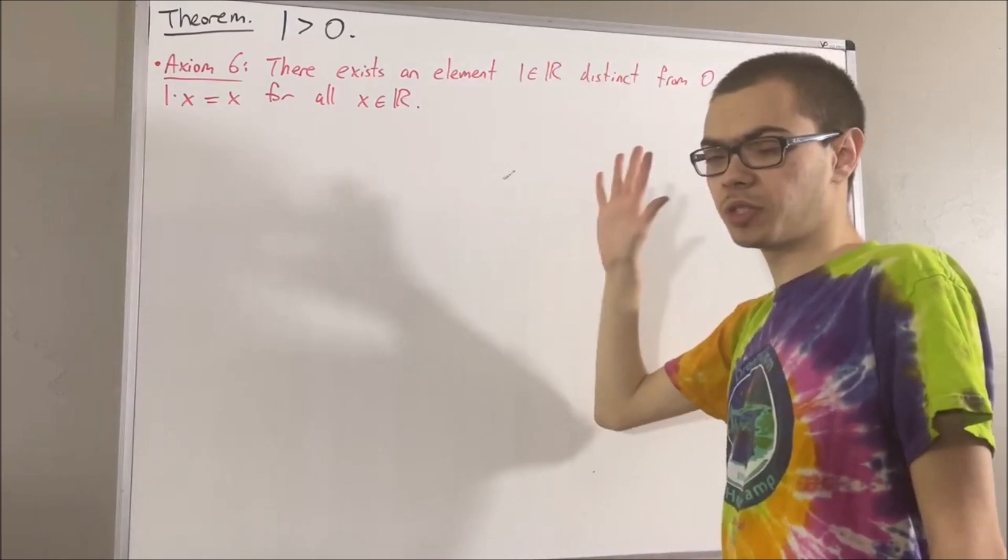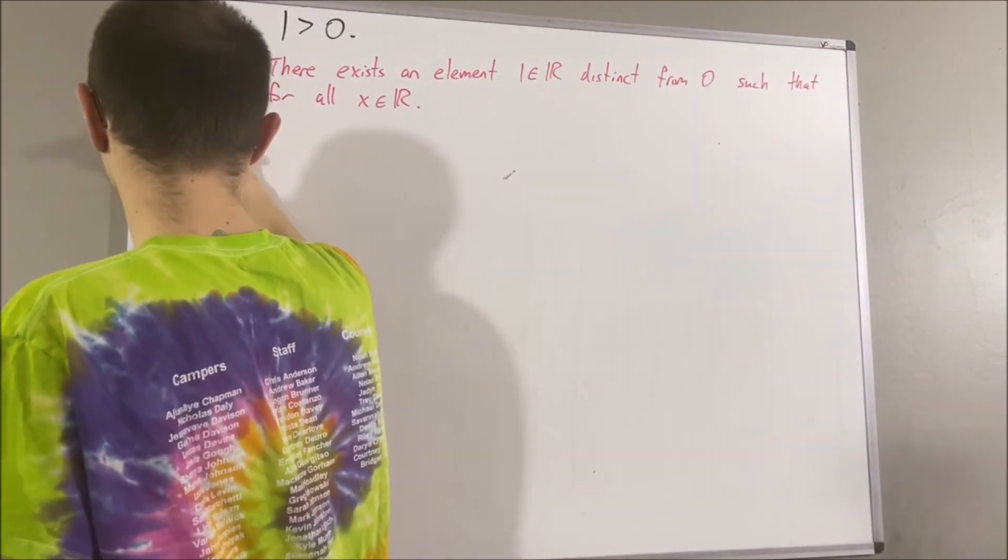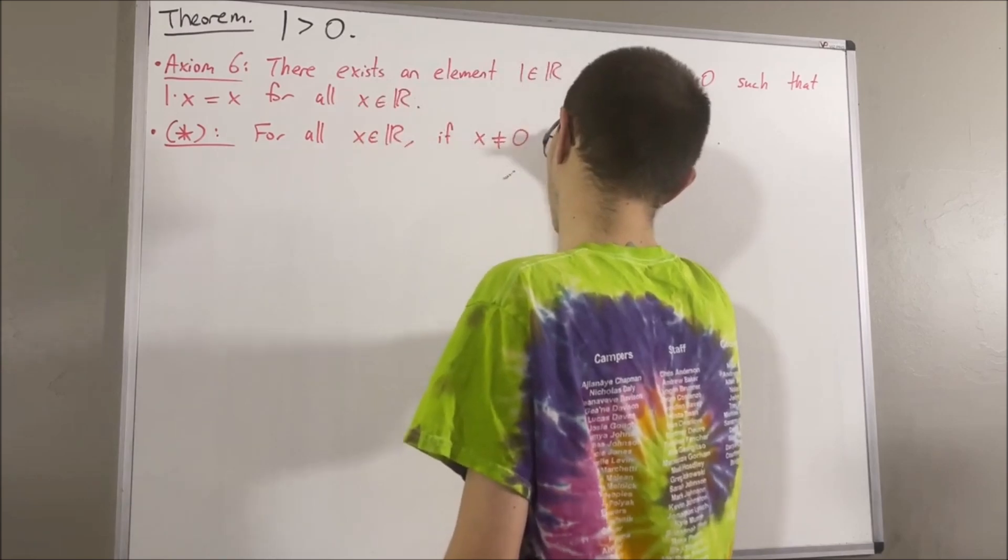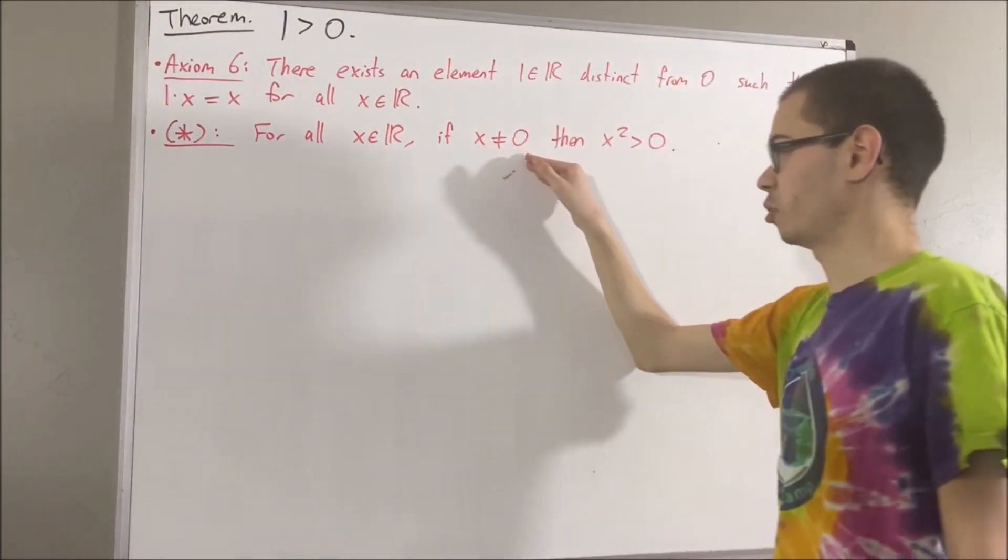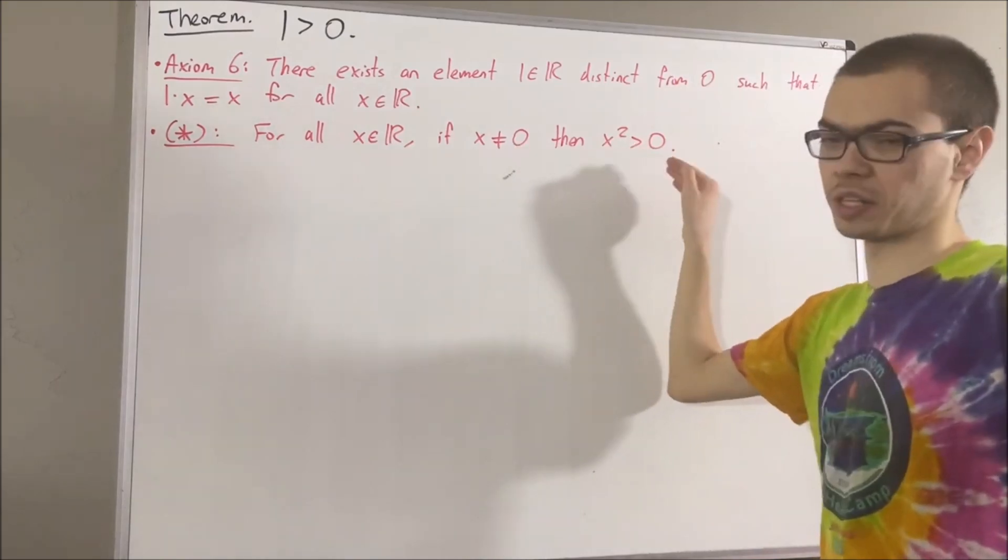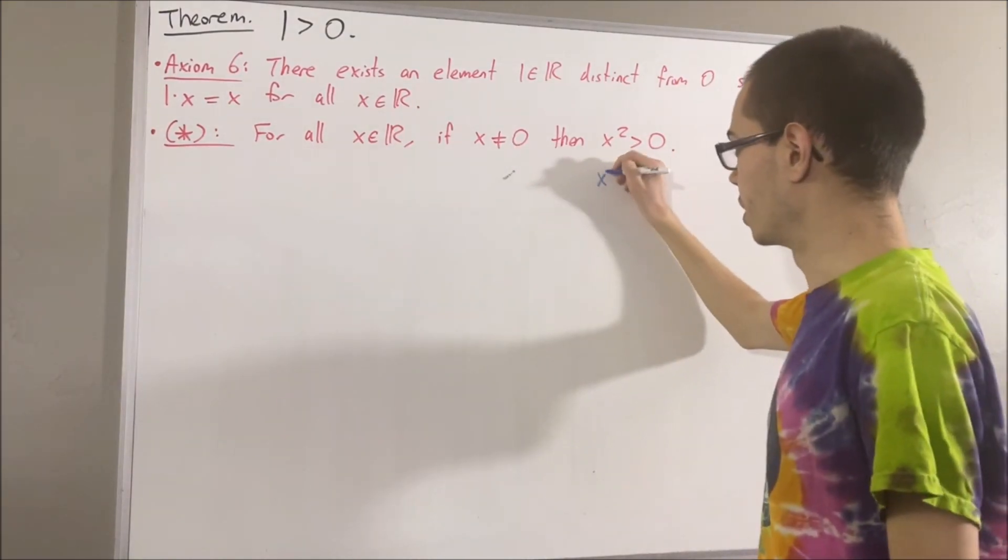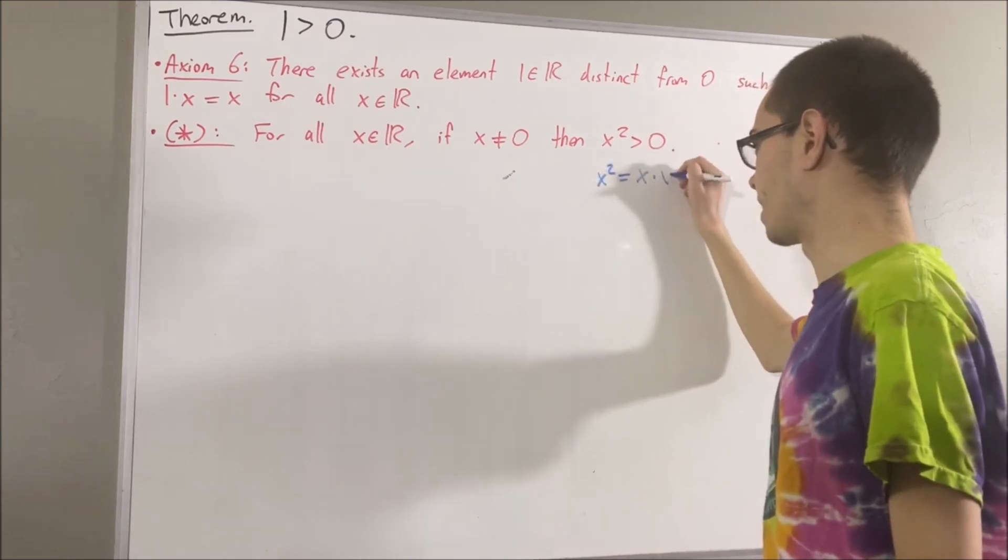We're also going to be using the following preliminary result, which we have proven. For all real numbers x, if x is not equal to 0, then x squared is greater than 0. And remember, x squared is just notation for x times x.